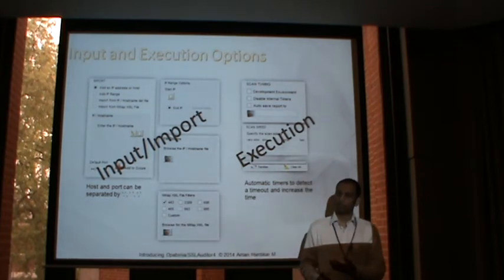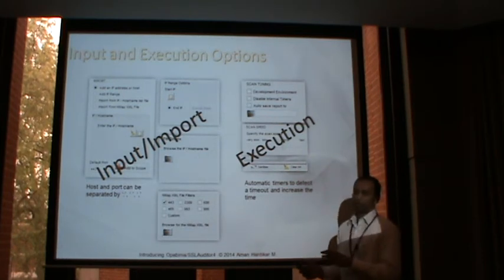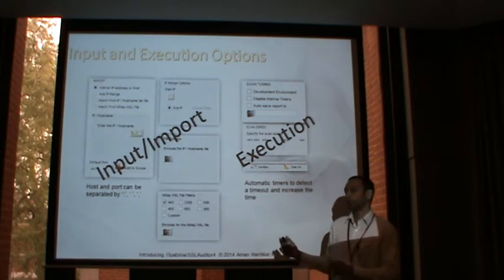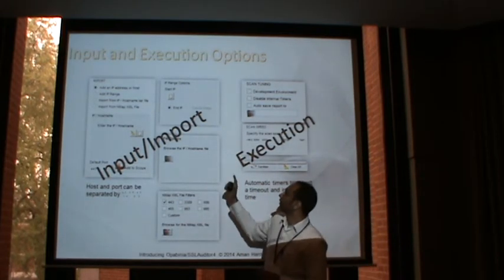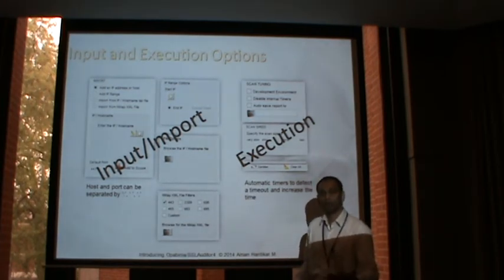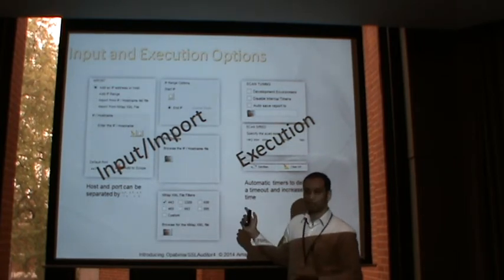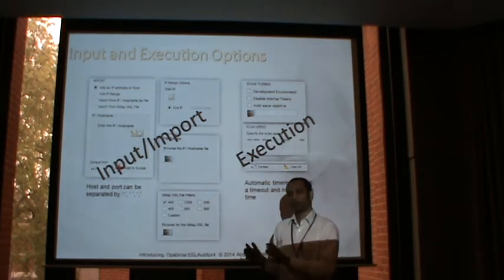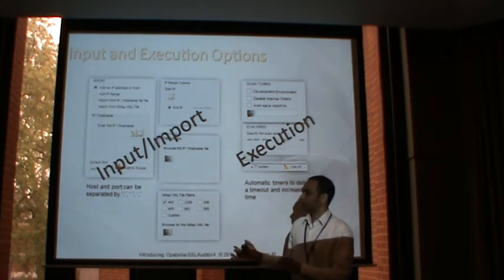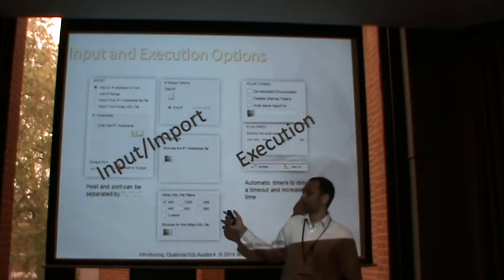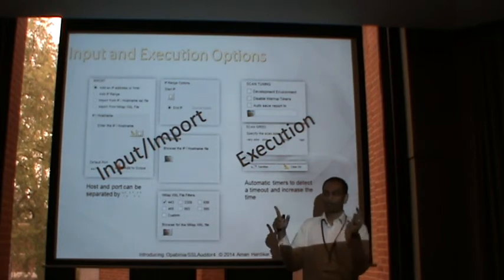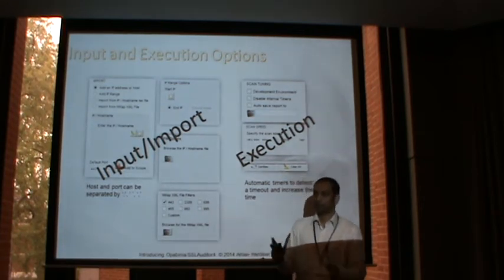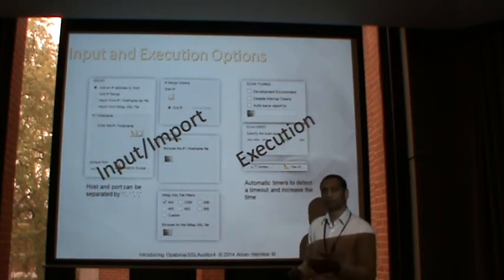The first component is the input modules. The tool accepts four different sources of input. One is the interface itself, where you can add your IP or host directly. The second is a range — you specify a start IP and an end IP and it generates the entire list. The third is an IP list file; you can separate an IP or hostname and port using a colon, space, or comma, so it accepts CSV files and also does sanitization, removing HTTP prefixes and suffixes. The fourth is an NMAP XML file, which accepts multiple ports — you can specify to grab all IPs or ports with a specific port open.